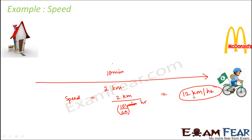What does 12 kilometers per hour mean? It literally means that the boy traveled at a rate such that in one hour he could cover 12 kilometers — even though he actually only traveled 2 kilometers. Speed tells us the rate at which he moved. Had he traveled for one full hour, he could have covered 12 kilometers. Speed gives you the distance the person could cover in one hour, one second, or one minute — with respect to whatever unit of time you are referring to.